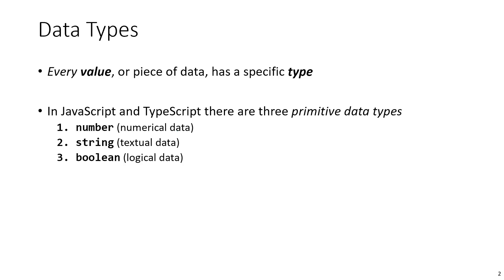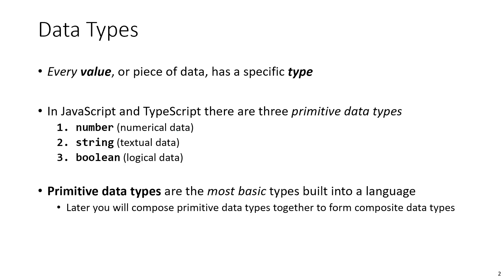A primitive data type is something that's built into the programming language. It's a fundamental unit that we can't represent something simpler than. A number or a string or boolean, these are the most fundamental data types we have available to us.